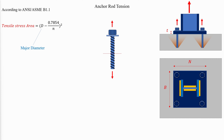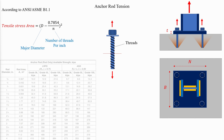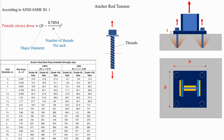The following table summarizes the available strength of the rods based on their nominal diameters and material. Please note that these values refer only to the strength of the rods themselves and the resistance of the concrete should still be calculated.